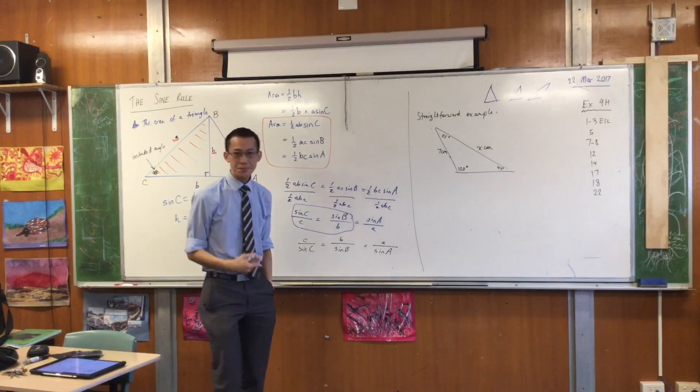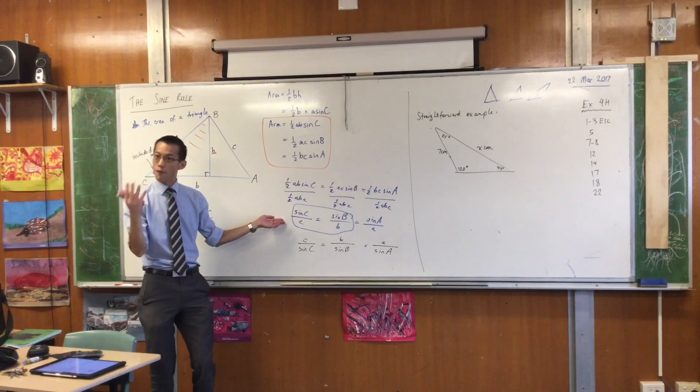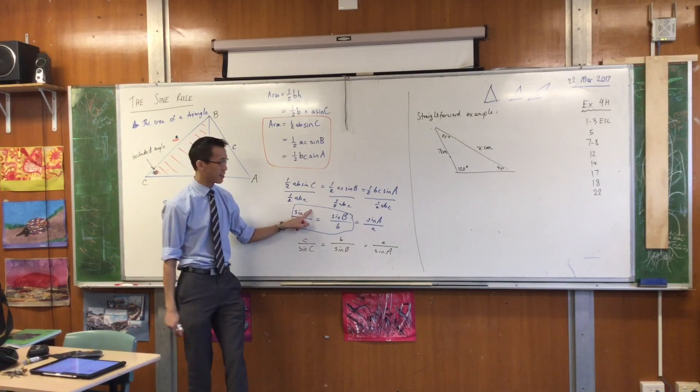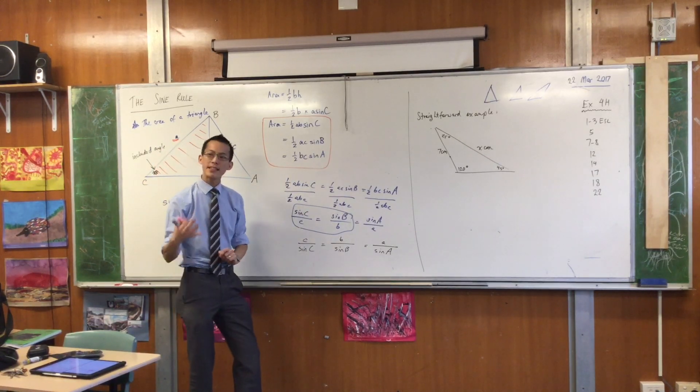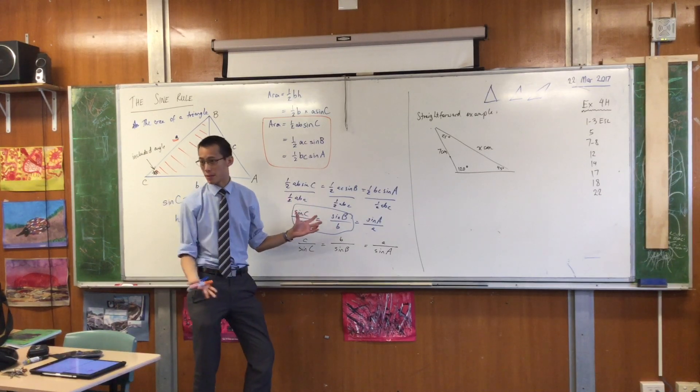You'll see why in a second. The sine rule, each version of it, requires four pieces, right? There's the piece you want to find, in this case it's a lake, and then there's three other things. Opposite angle, and then another side with its opposite angle.